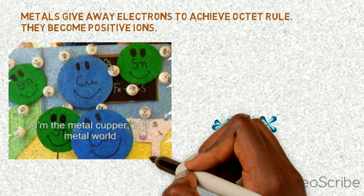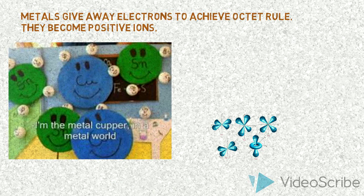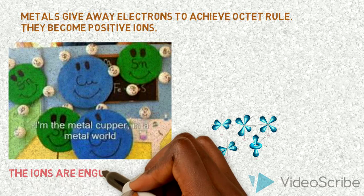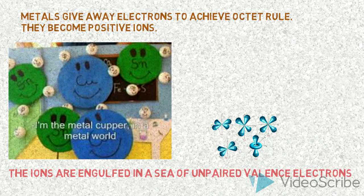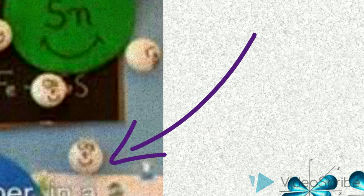Since it gives away valence electrons, it becomes a positive ion. Because of this, all the ions are engulfed in a pool or sea of valence electrons since there are large amounts of unpaired ones.